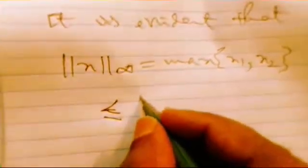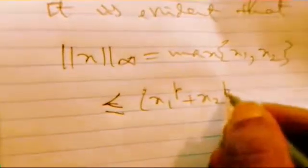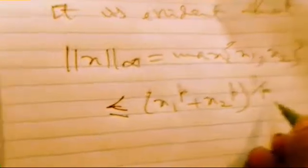It is evident that this non-negative structure, the norm of x infinity, the result we are taking for two values, so maximum of x_1 and x_2, will be less than or equal to, using this inequality, x_1 to the power p plus x_2 to the power p, whole to the power 1 by p, which is the norm of x_p.